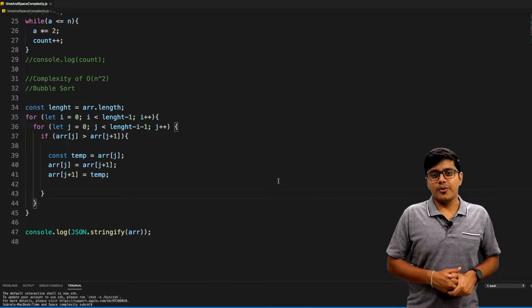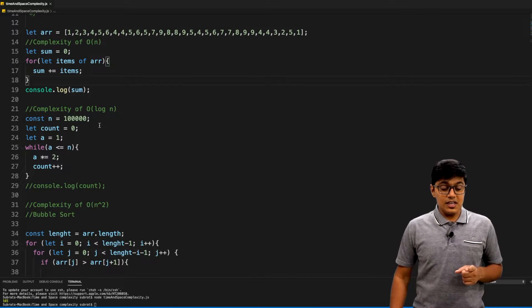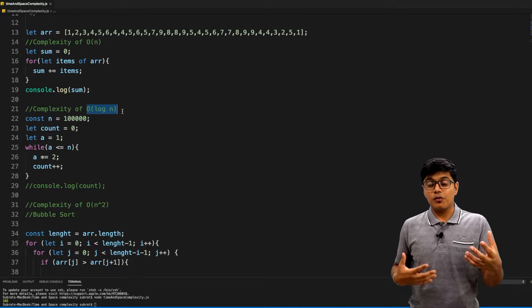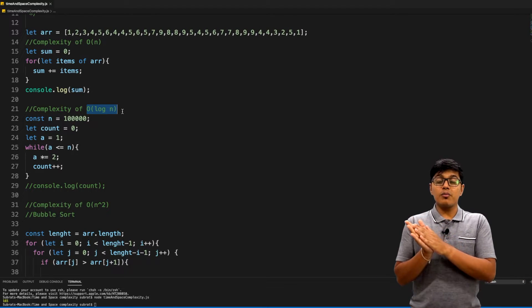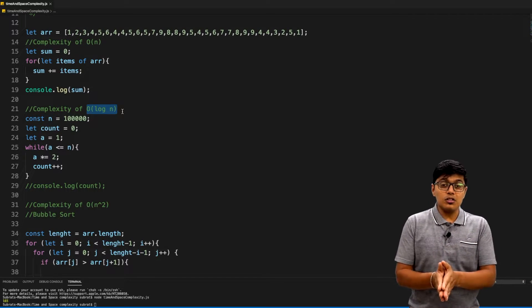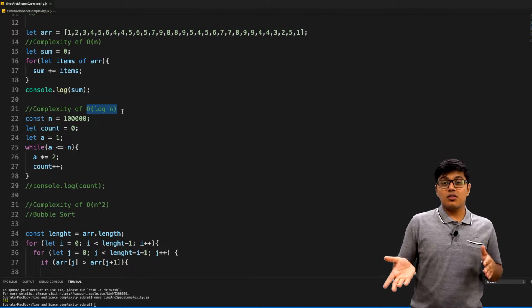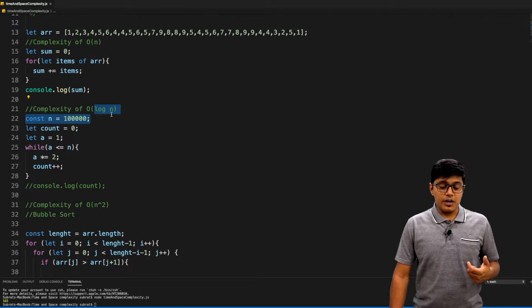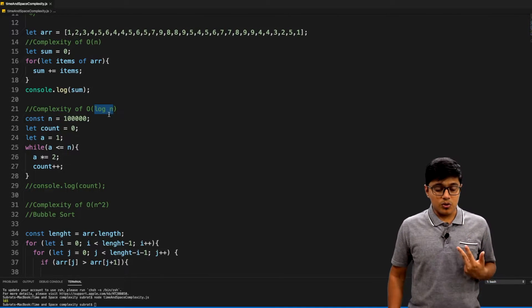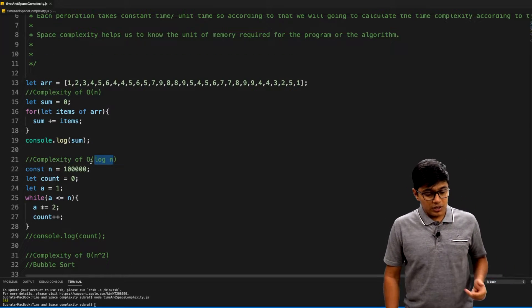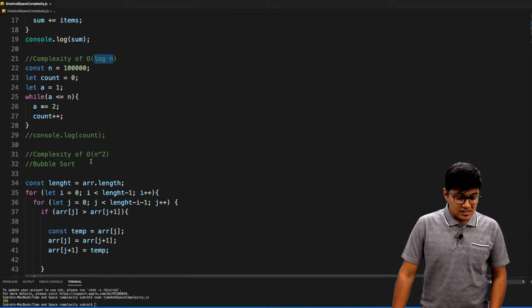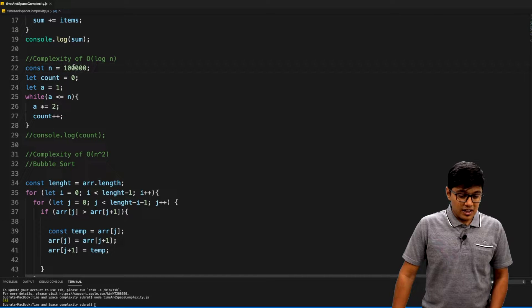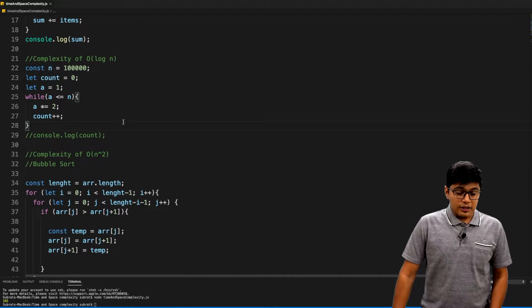Let's jump in. We'll see in which scenario the execution of a program will be logarithmic output. If the time is going to take a logarithmic way, and if you ever see log n, by default its base is two. What I'm doing here is I have a value as n and it is 100,000.